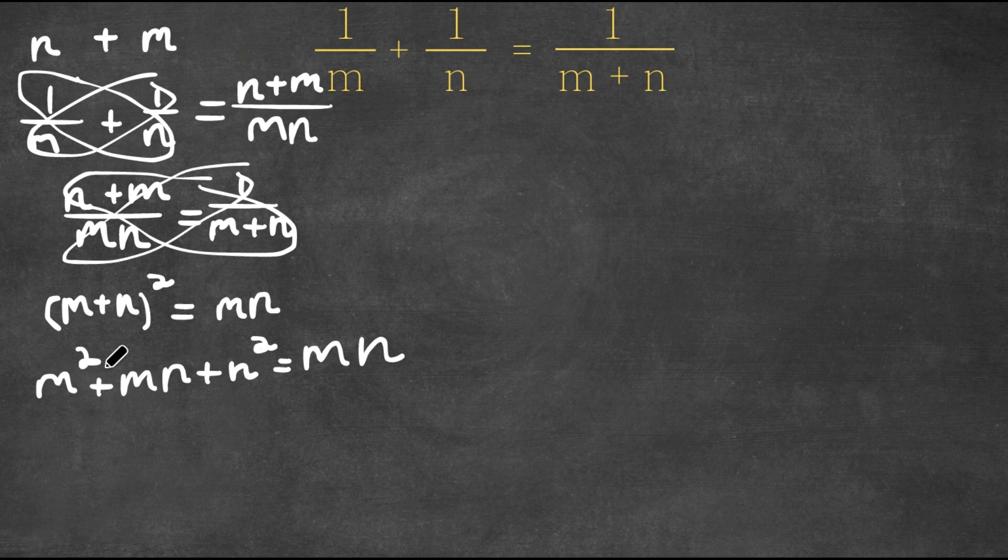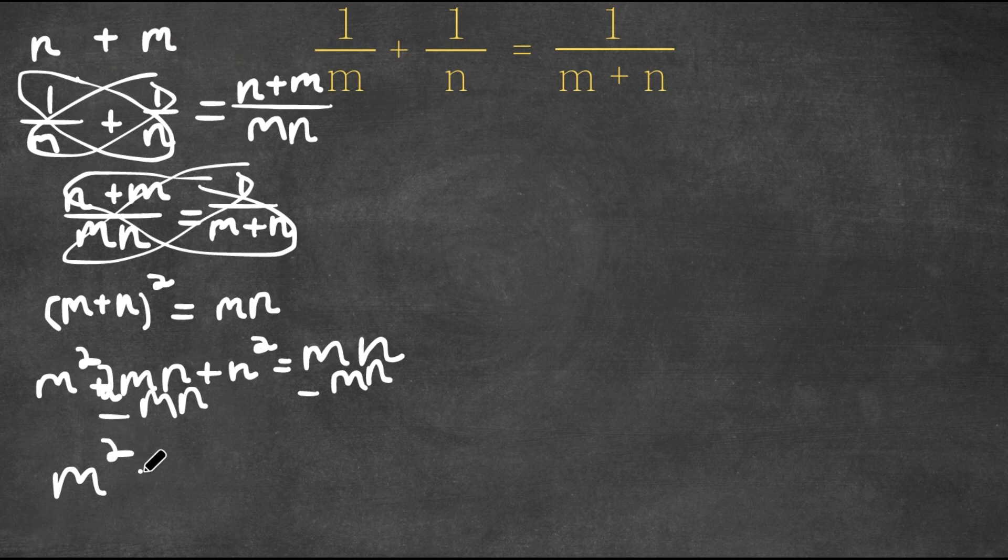Now this is actually, sorry, this is actually 2 m n. Now if I subtract by m n on both sides, 2 m n minus m n is simply just m n. So we get m squared plus m n plus n squared is equal to 0.